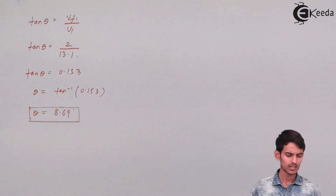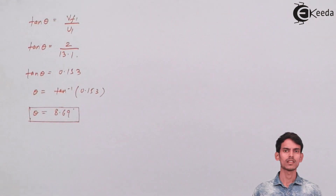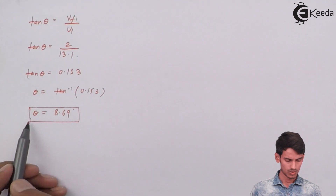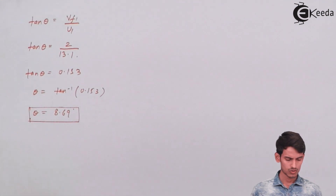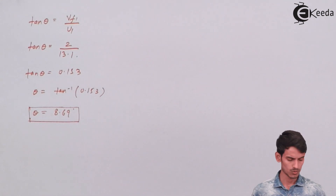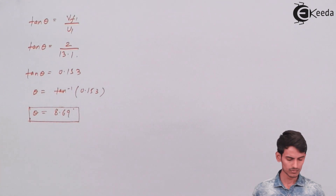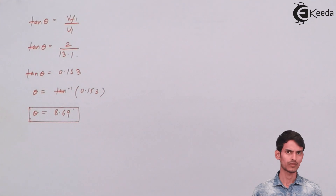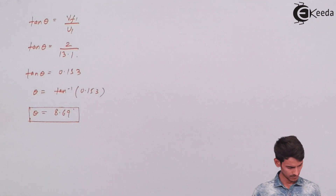So the vane angle at the inlet, theta, comes out to 8.69 degrees — the first part of the question is done. Now to use trigonometry again — this time tan phi — at the outlet side of the triangle.